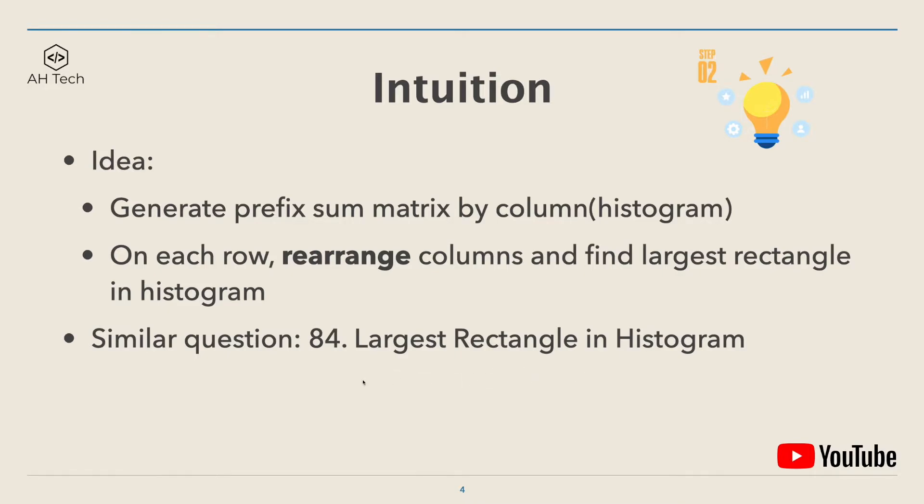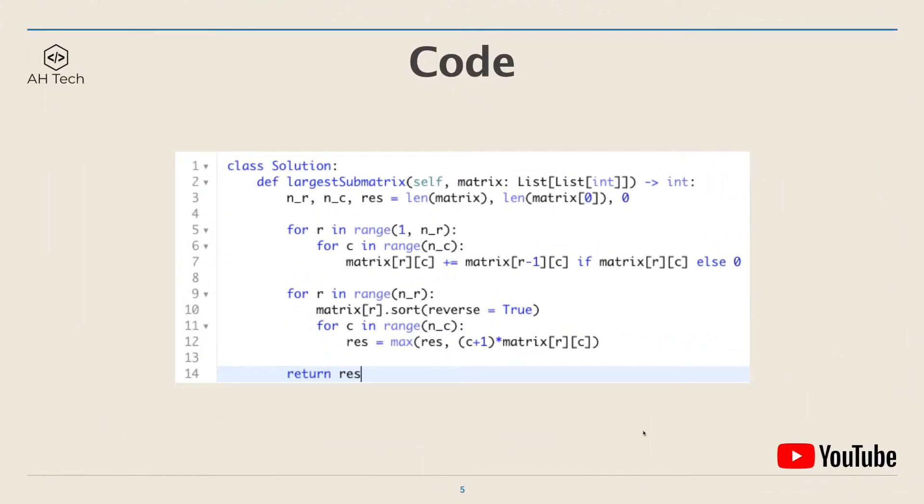Now let's look at the code. The first part of the code is to generate the prefix sum matrix which is the histogram. And here we can just modify the input matrix directly. And notice that if the matrix RC, the current cell is 0, then it means that there's no way to form a rectangle or square at this position. So we will just reset it to 0.